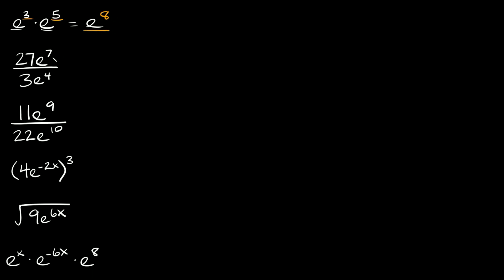Now here we have 27e to the seventh over 3e to the fourth. We can simplify the numbers — 27 over three is equal to nine. So we can write a nine on top and then multiply that by what we still have left over in our fraction, which is e to the seventh over e to the fourth.